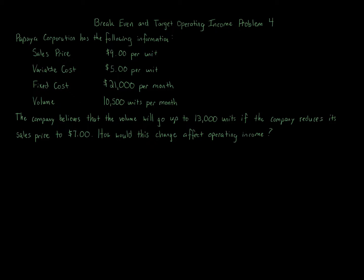This is exactly the type of question a manager or business owner might consider. From a managerial standpoint, there's the interplay of supply and demand — the price we set may create less demand. If we lower our price from $9 to $7 per unit, volume goes up from 10,500 to 13,000 per month. Operating income in managerial accounting is sales minus variable costs and fixed costs related to production — you can think of it as profit.